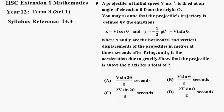Number 9. A projectile of initial speed V meters per second is fired at an angular elevation θ from the origin O. You may assume that the projectile's trajectory is defined by the equations x equals Vt cos θ and y equals minus a half gt squared plus Vt sin θ,